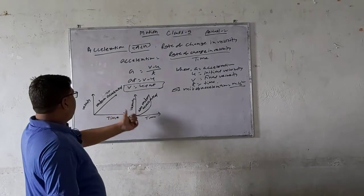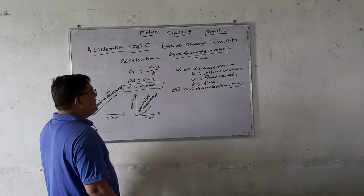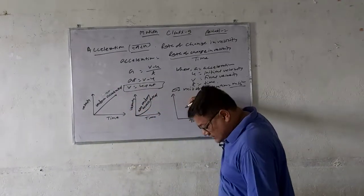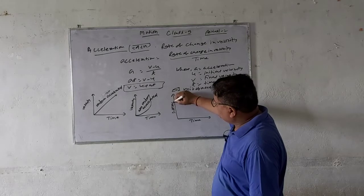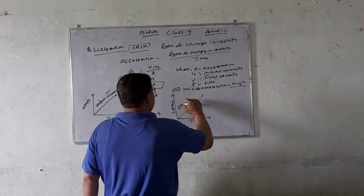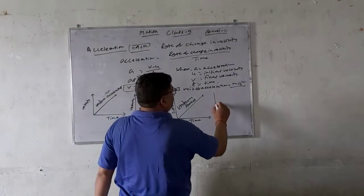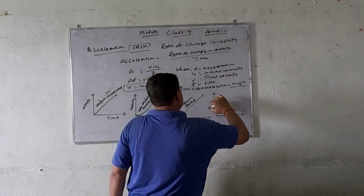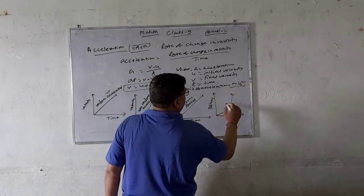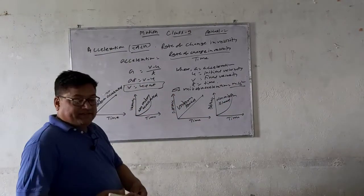So on the velocity-time graph, a straight line is uniform accelerated motion and a curved line is non-uniform accelerated motion. Now if we go to the distance-time graph, a straight line on the distance-time graph is called uniform speed. A curved line on the distance-time graph is non-uniform speed, which can also be called non-uniform motion.